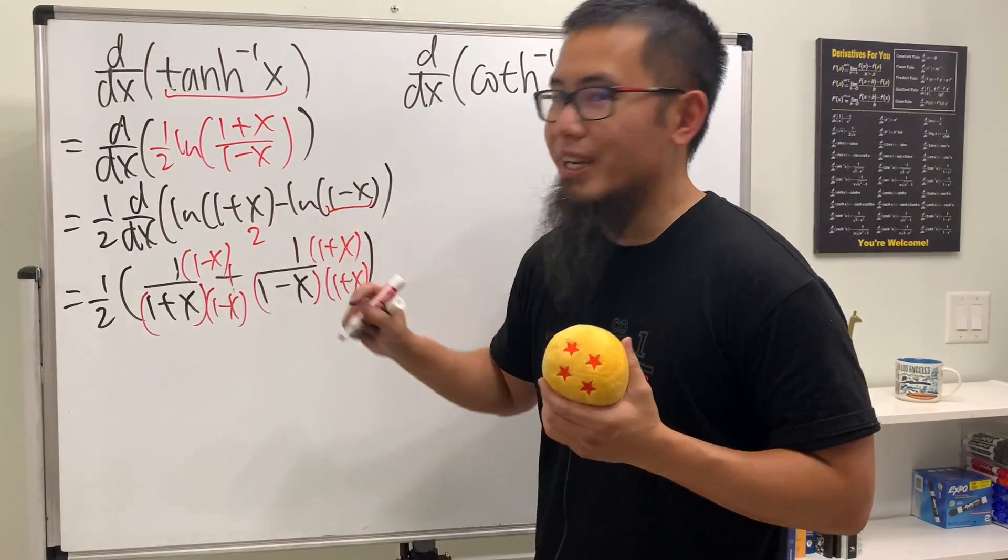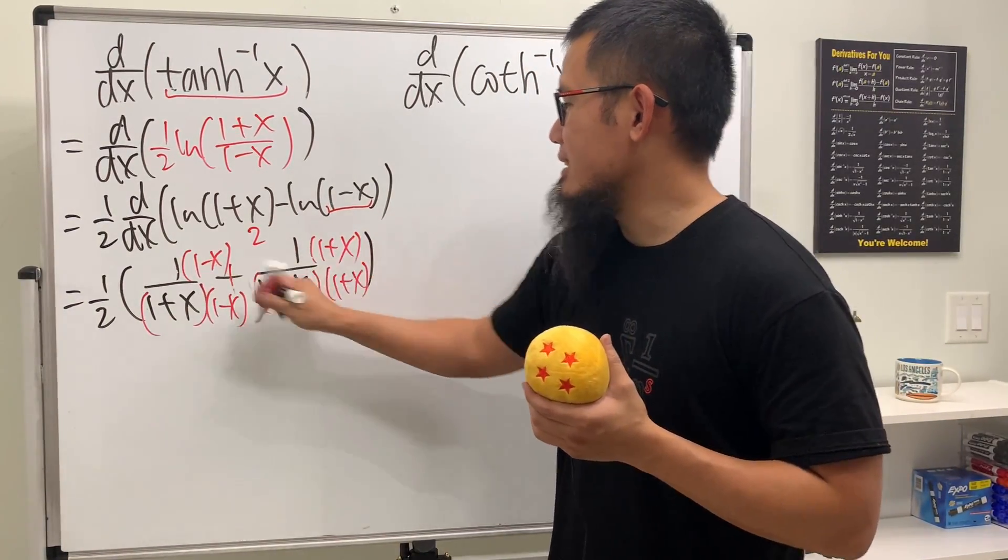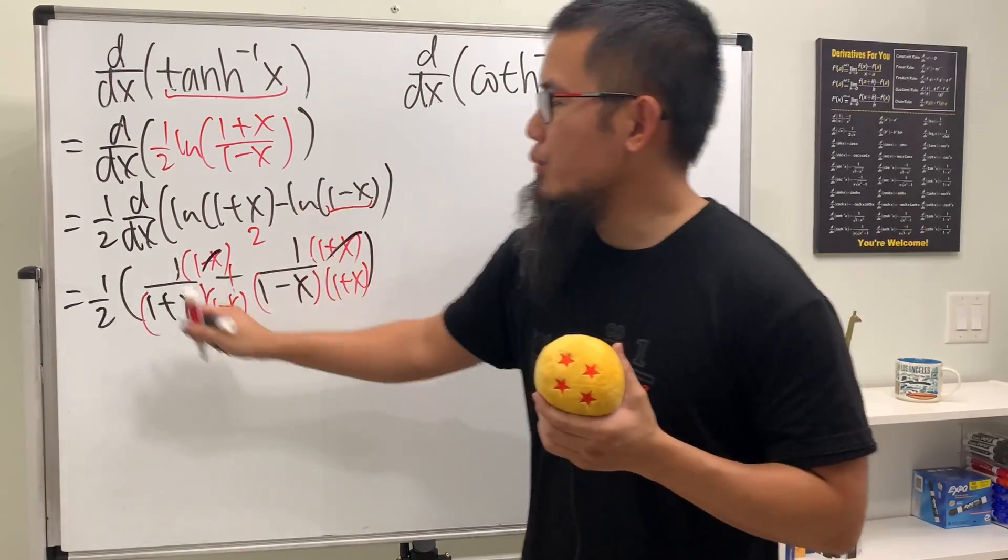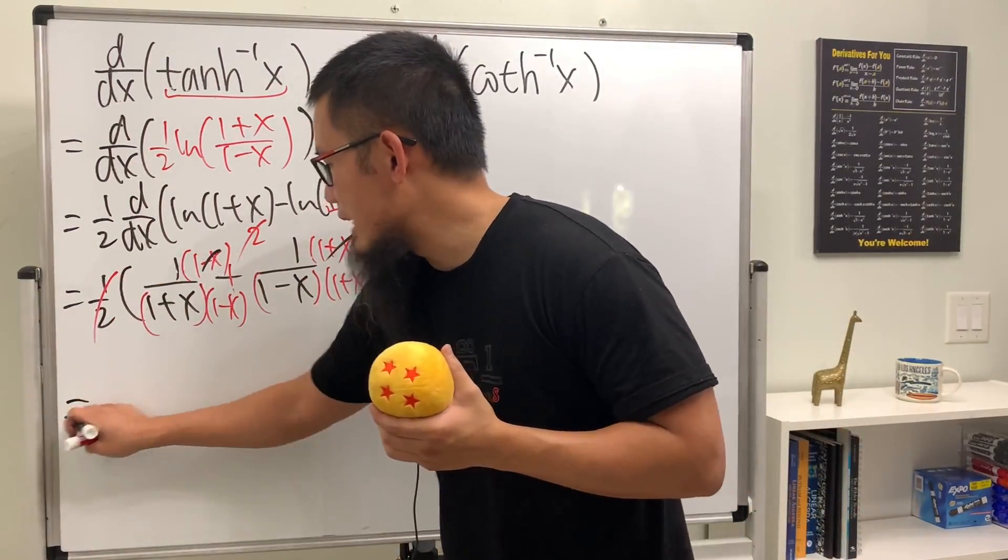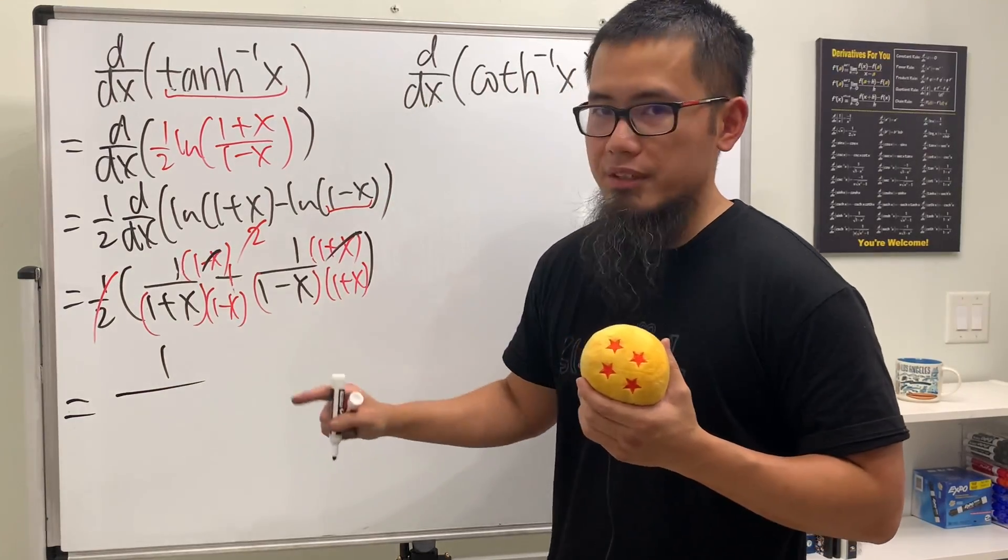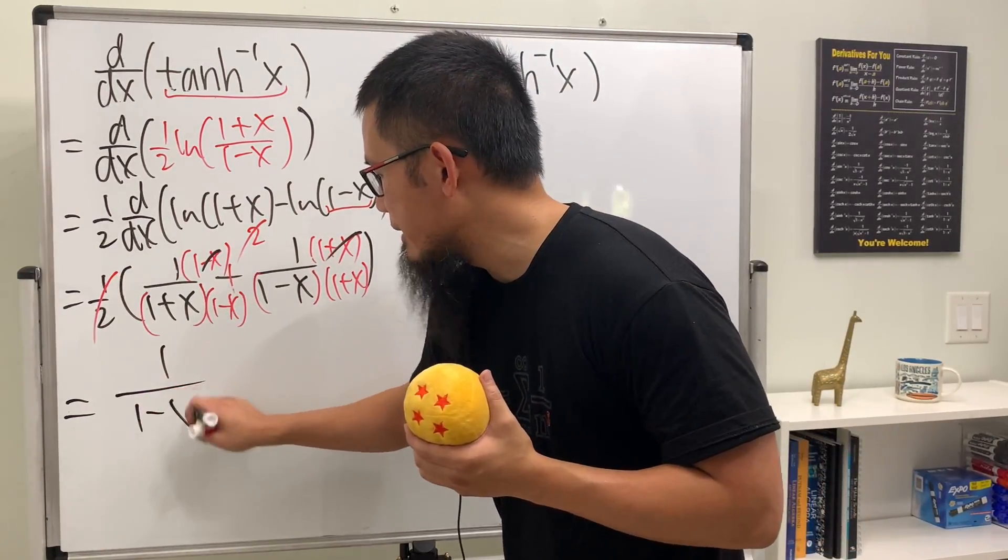Now let's just combine the fractions. Check this out: we have 1 plus 1 which is 2, and then -x plus +x they cancel out, and then 2 over 2 they just cancel out to be 1. So all in all we will just have 1 on the top over, for the denominator, 1 minus x squared, and then we are done.